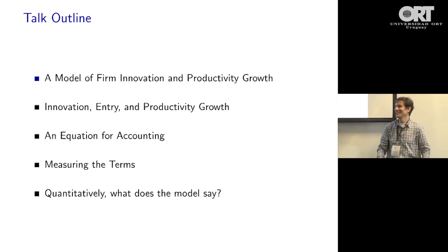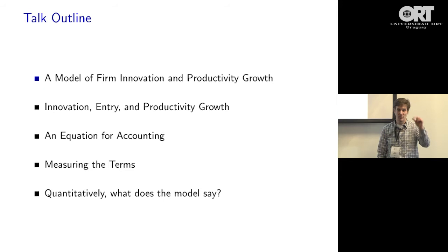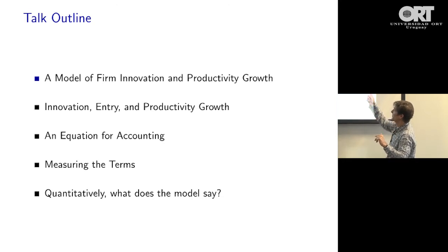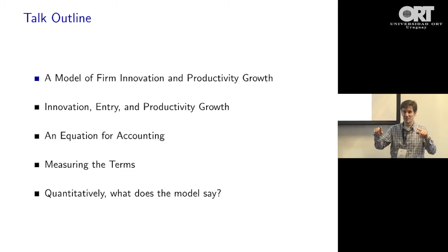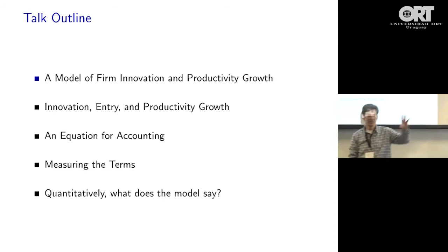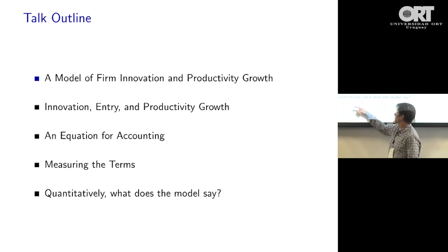The talk outline: I want to show you the model — a class of models of firm innovation and productivity growth. I'll take two components out of the model. There's an abstract relationship between what I call real innovative investment and aggregate productivity growth. I'll also relate firm entry to real innovative investment. Using those two equations, I can substitute out for real innovative investment and get a relationship between two endogenous quantities: the rate of firm entry and aggregate productivity growth. That gives me an equation for doing an accounting: if entry changes, what's the predicted change in productivity?